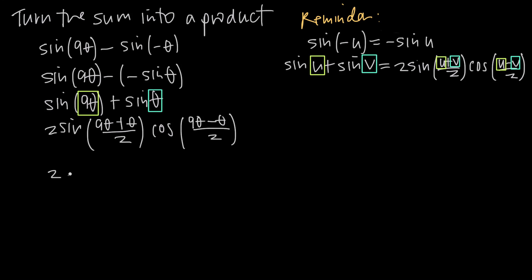So we end up with 2 sine—9θ plus θ is 10θ, so 10θ divided by 2—times cosine—9θ minus θ is 8θ, so 8θ over 2. So we end up with 2 sine, 10 divided by 2 is 5, so the result here is 5θ. 8θ divided by 2, or 8 divided by 2 is 4, so we end up here with cosine of 4θ.